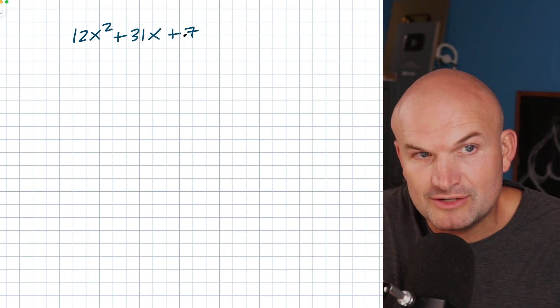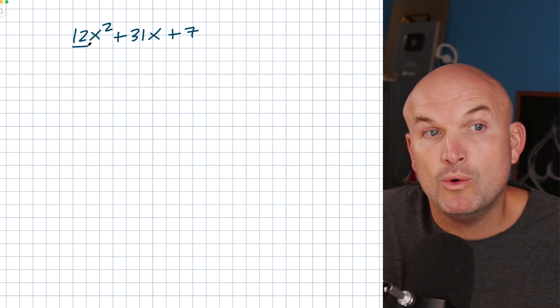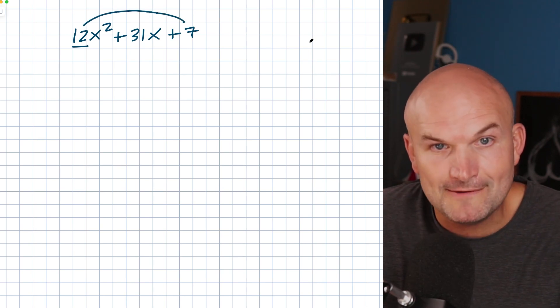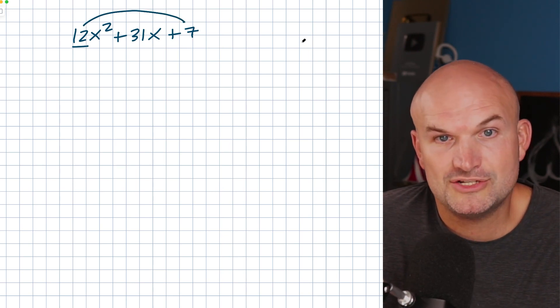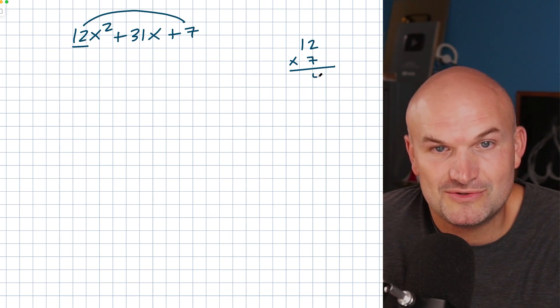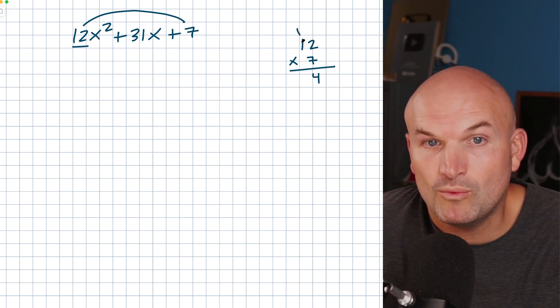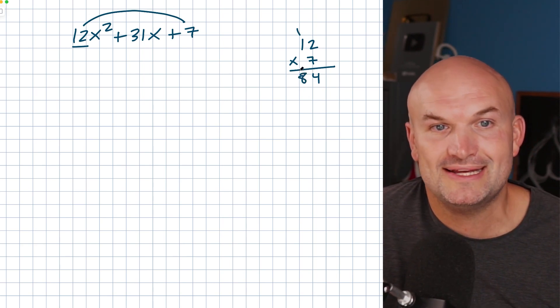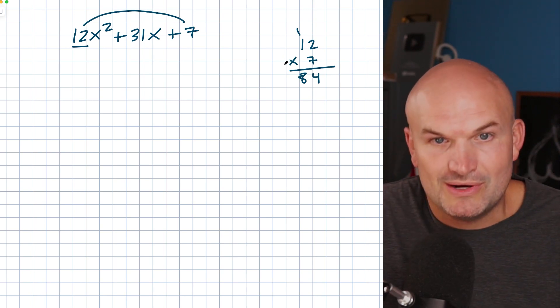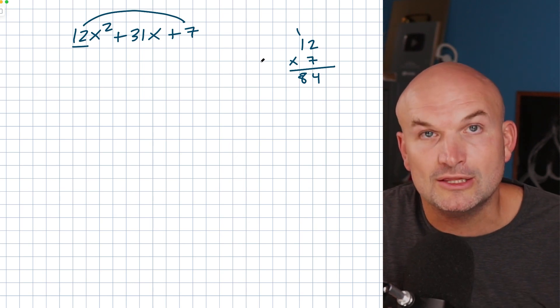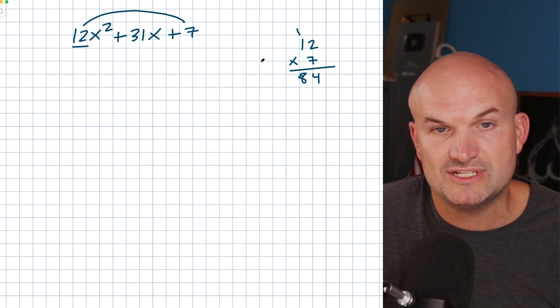So the first thing we want to do when we want to factor this is we want to go ahead and multiply the coefficients of our x squared times our constant. So we have 12 times 7. Now, you could do this mentally in your head, or let's just break it up like we're back in the old days. We're just going to do a one digit times a two digit number. So just to multiply this, seven times two is going to be 14, seven times one is going to be seven plus one is going to be eight. So it equals 84. Now, if you have a calculator, feel free to use one, or if you're good at mental math, go ahead and do it. But what I want to do is just focus on the slow approach to make sure that we're going to be doing this correctly.